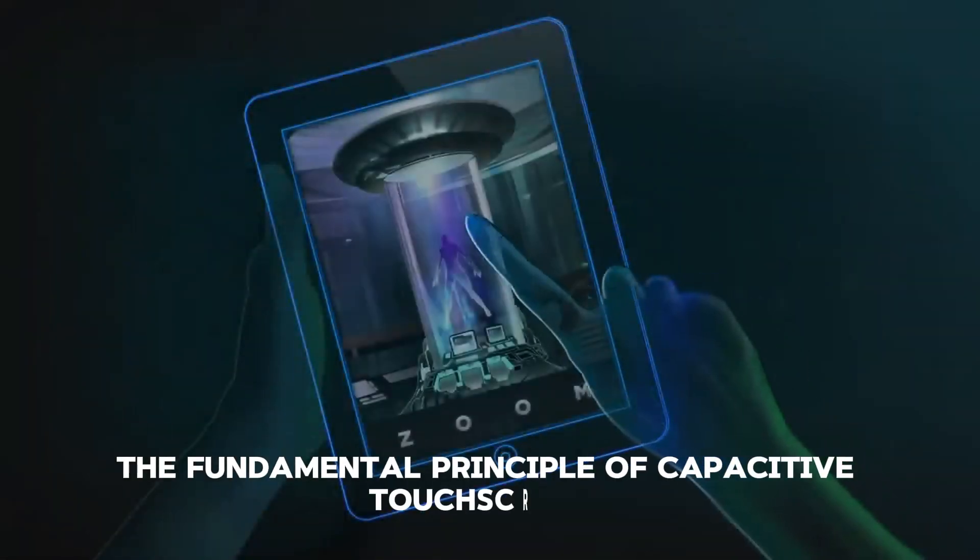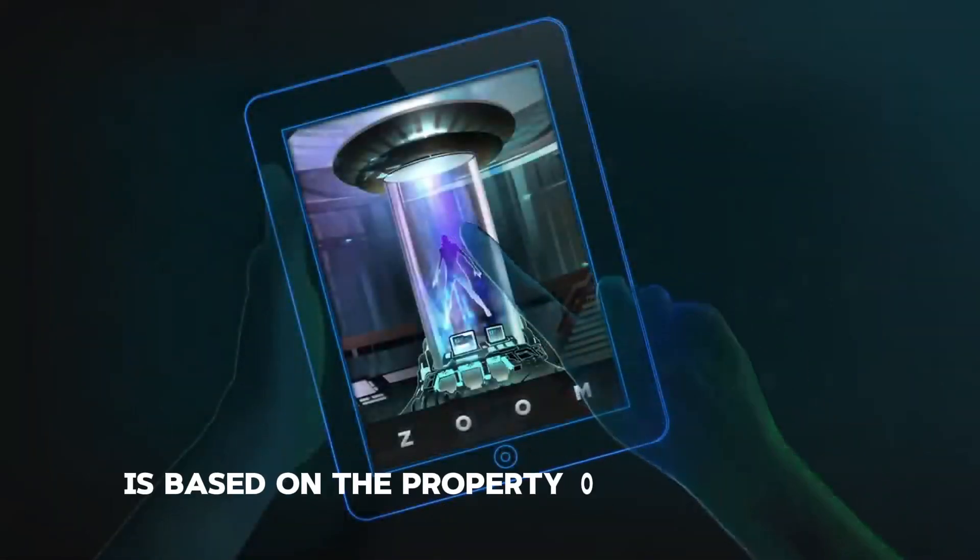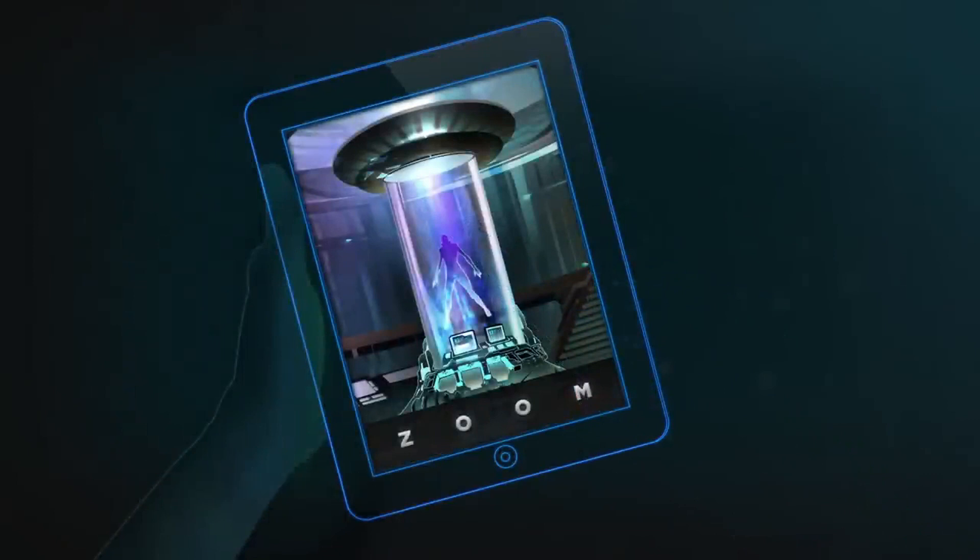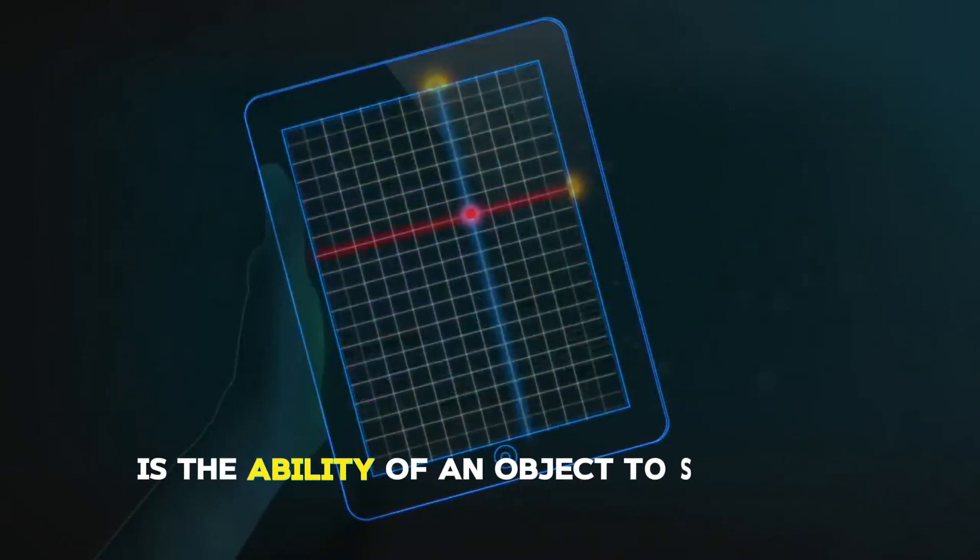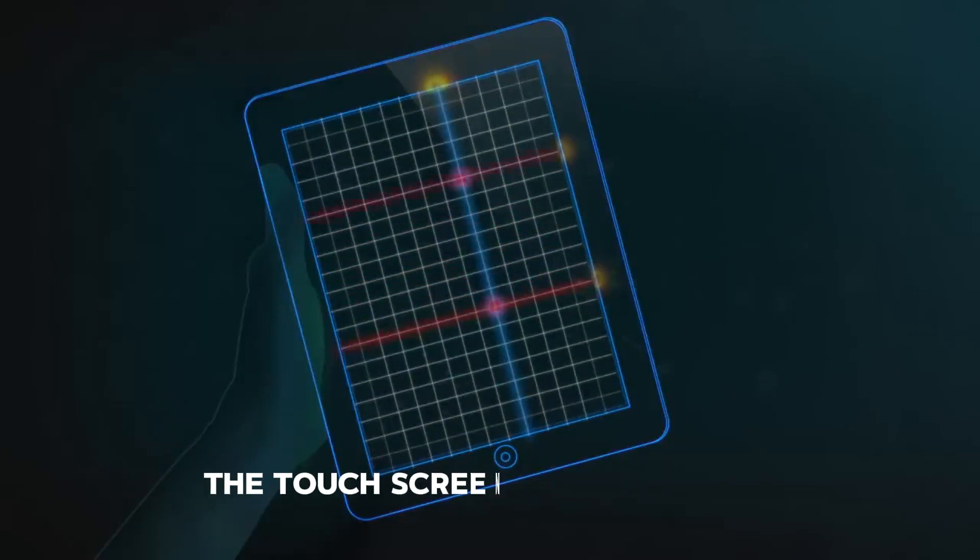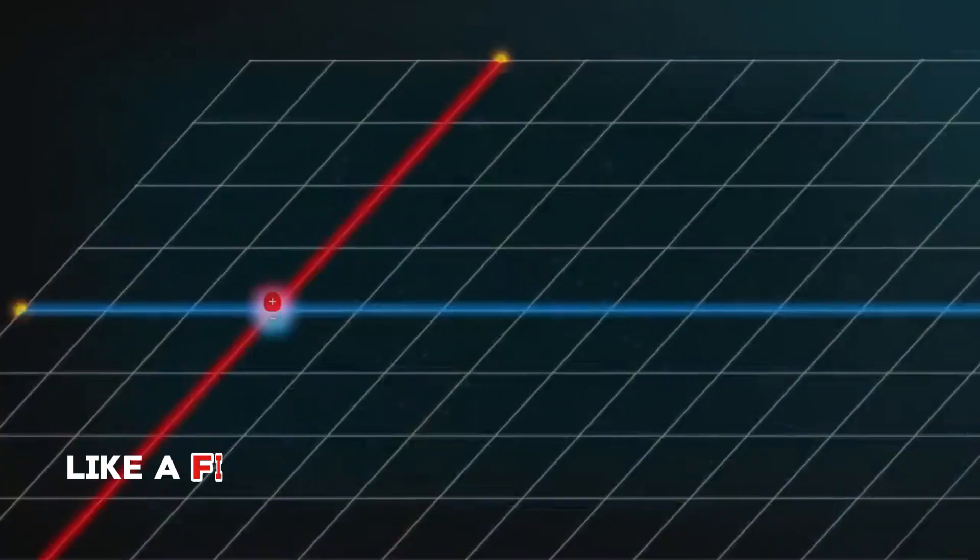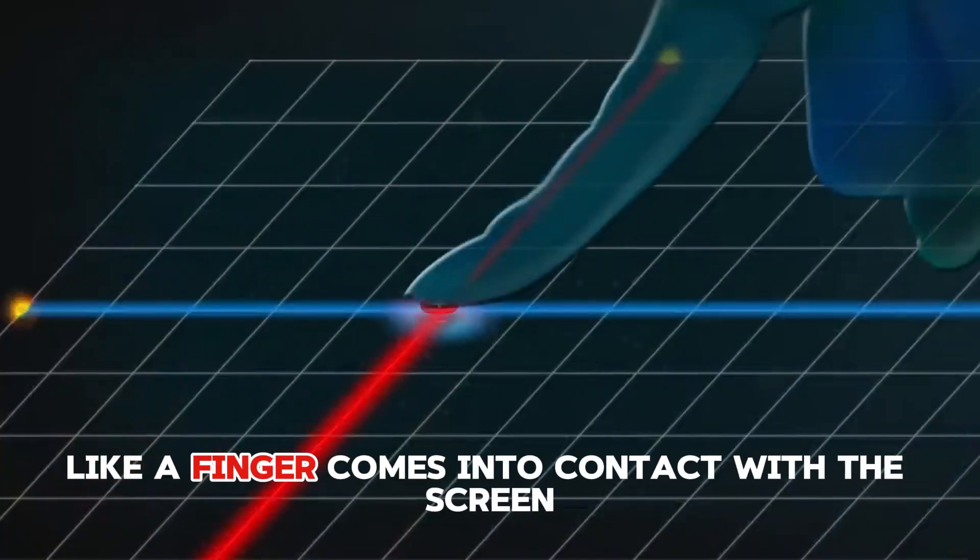Basic principle. The fundamental principle of capacitive touchscreens is based on the property of capacitance. Capacitance is the ability of an object to store an electric charge. In this context, the touchscreen's capacitance changes when a conductive object, like a finger, comes into contact with the screen.